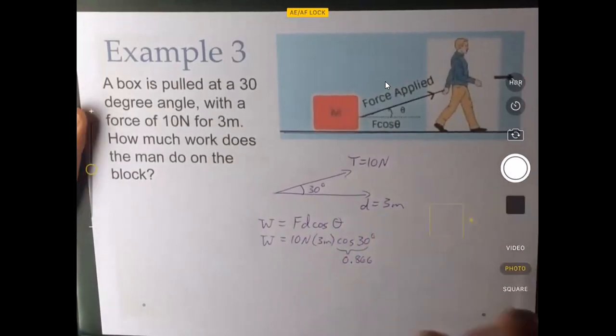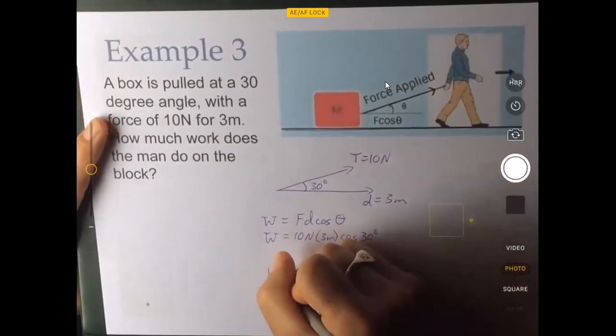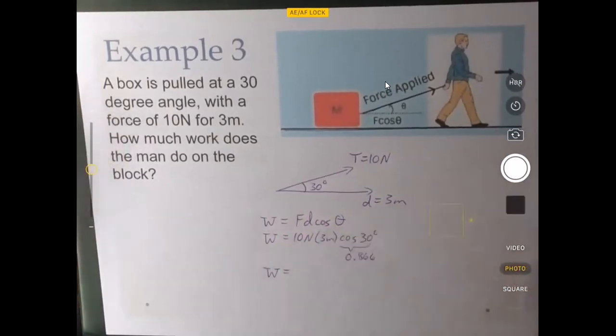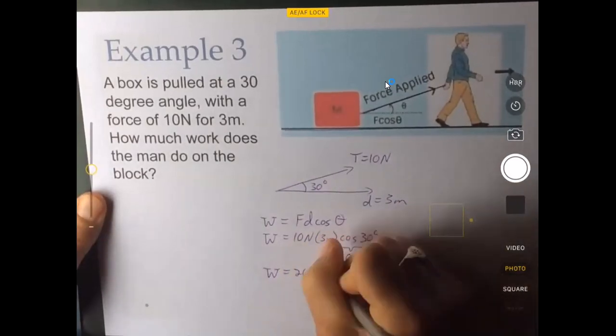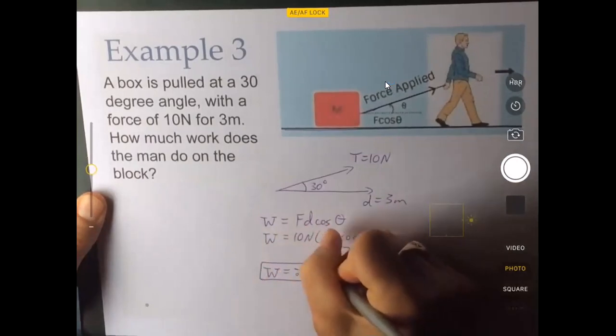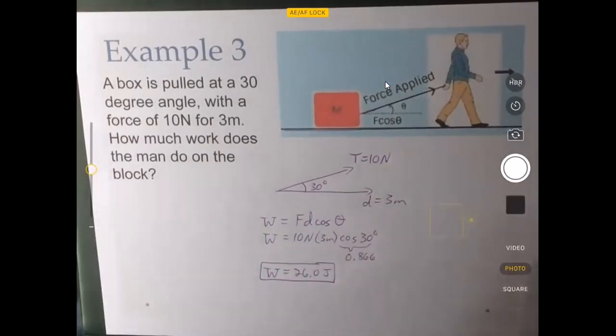And so the cosine of 30 degrees is 0.866. You don't need to memorize that. I'm just showing you how it varies from one case to the next. And then we can calculate the work. So 10 times three is 30. And then 30 times the cosine of 30 degrees. And so that comes out to 26.0 joules.